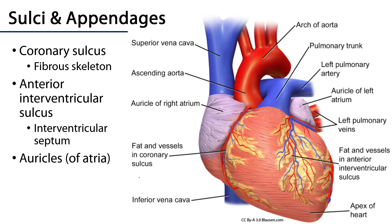The surface of the heart has various grooves called sulci, which are important for the transmission of coronary arteries, their branches, and cardiac veins. Running between the right atrium and right ventricle, and between the left atrium and left ventricle, is the coronary sulcus. This coronary sulcus is in line with the fibrous skeleton of the heart and the atrioventricular valves — anything superior to it is atrium, anything inferior is ventricle.